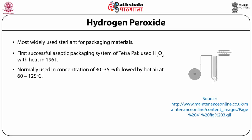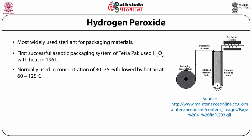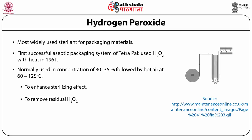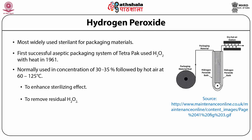Many aseptic packaging systems use hydrogen peroxide at concentrations from 30 to 35 percent as a sterilant for packaging materials and other food contact surfaces, followed by hot air at 60 to 125 degrees Celsius to enhance the sterilizing effect and to dissipate residual hydrogen peroxide.